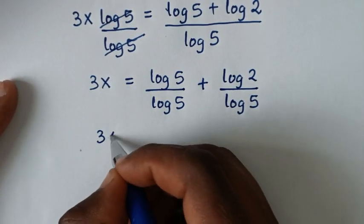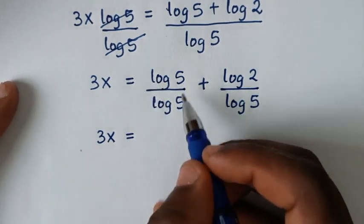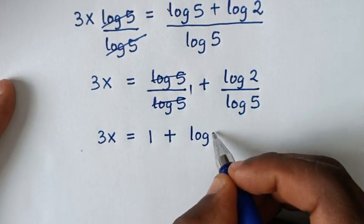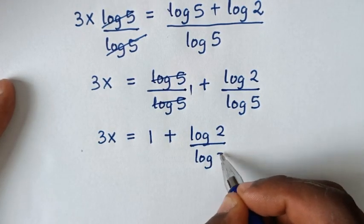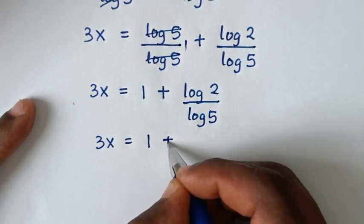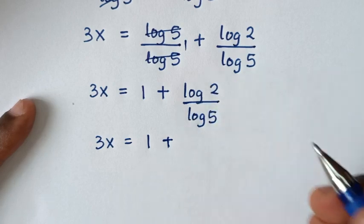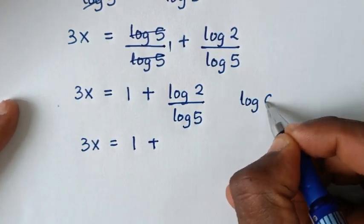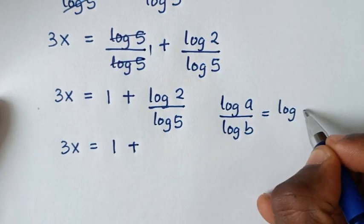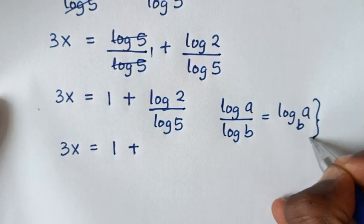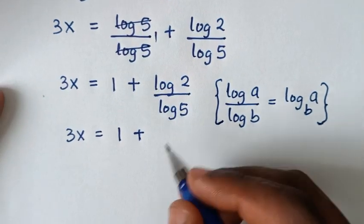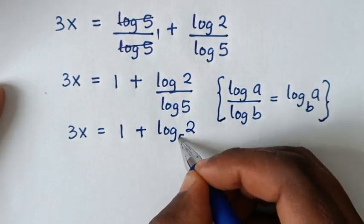Then it will be 3x is equal to 1 plus log of 2 over log of 5. Now log of 2 over log of 5 is in the form of log a over log b, which is equal to log of 2 base 5. So we apply this form: log of 2 over log of 5 is the same as log of 2 base 5.